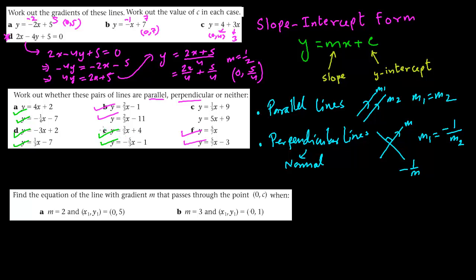Now, the equation of the line. We have to find the equation of a line when we know the gradient and the y-intercept (0, c). The equation is y equals mx plus c. If the gradient m is 2 and the y-intercept is 5, the equation is y equals 2x plus 5. The next example: gradient is 3, so y equals 3x plus c, and c is the y-intercept which is 1, giving y equals 3x plus 1.